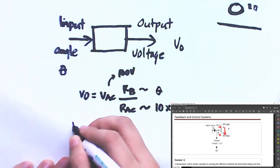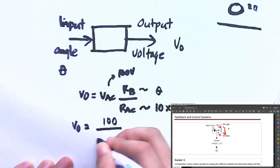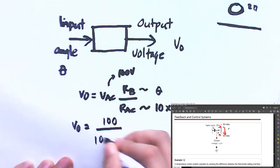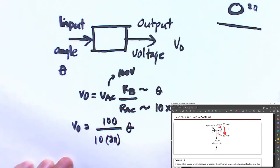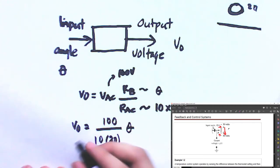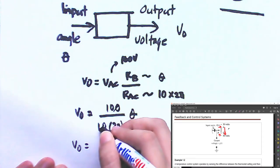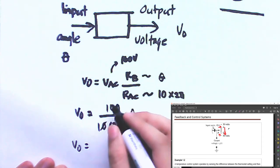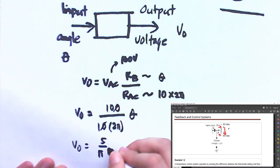We can solve this as: V_O equals 100 divided by (10 times 2π), which leaves us V_O equals, expressed in terms of π: 5/π times θ.